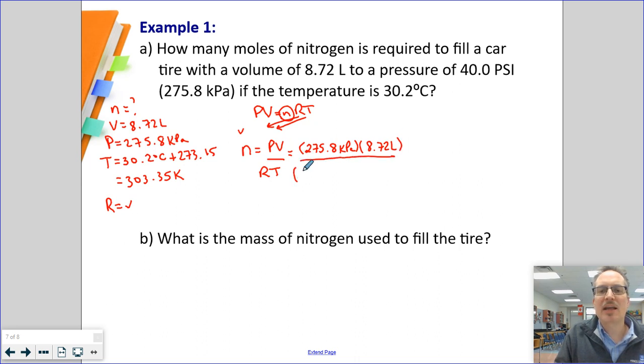Divided by 8.314 kPa·L over mol·K, divided by 303.35 K. Now it's at this time that I want to make sure we type this in the calculator correctly. On your calculator, we're going to take 275.8 times 8.72, enter, divided by 8.314, enter, divided by 303.35.